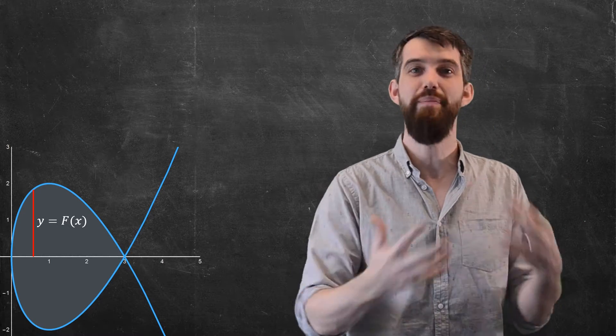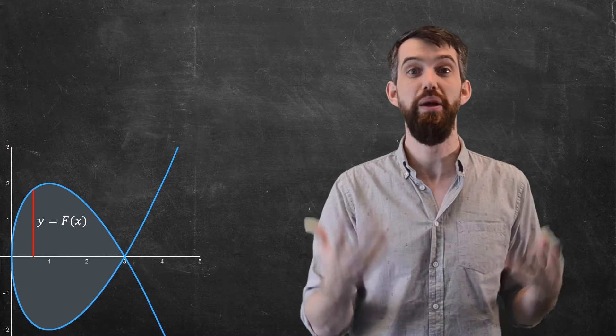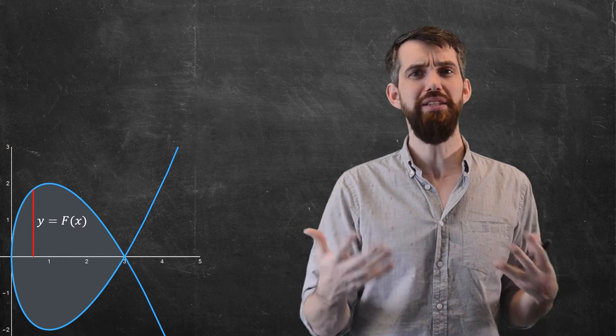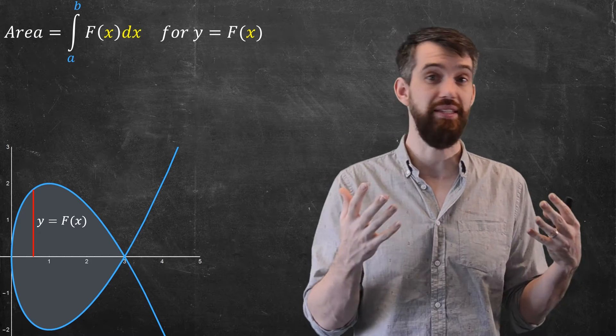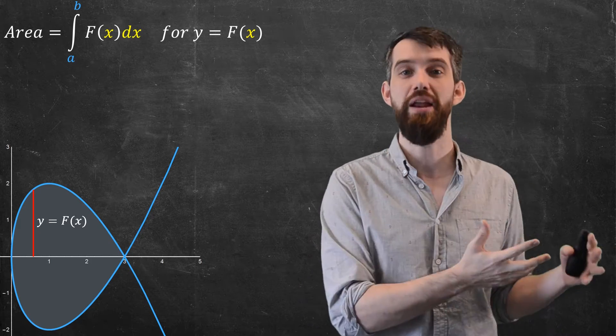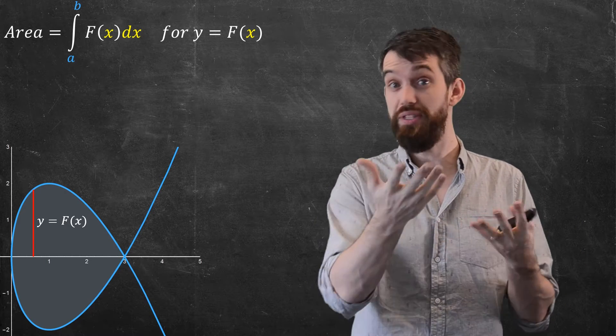and maybe multiply by 2 by symmetry at the end, but just take the positive half, then that's just a familiar y is f of x. And then what we would typically say would be that the area was going to be the integral from a to b, some left endpoint and some right endpoint on your x values, of the y, or in other words, the f of x dx.